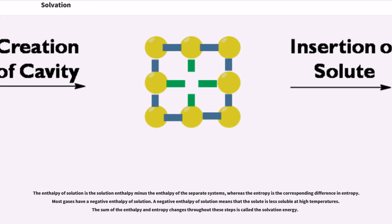The enthalpy of solution is the solution enthalpy minus the enthalpy of the separate systems, whereas the entropy is the corresponding difference in entropy. Most gases have a negative enthalpy of solution. A negative enthalpy of solution means that the solute is less soluble at high temperatures. The sum of the enthalpy and entropy changes throughout these steps is called the solvation energy.